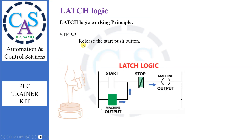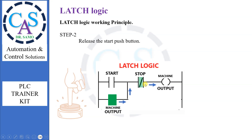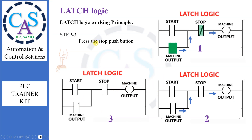Step 2: Release the start push button. When we release the start push button, nothing will happen, because output gets the signal from latch. Step 3: Press the stop push button. As the stop push button is normally connected, on pressing it will be disconnected. It will break the link between output and latch. The latch will be off, and the flow of signal will be discontinued.